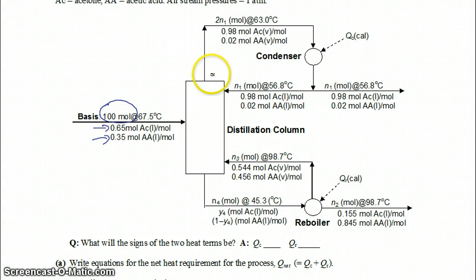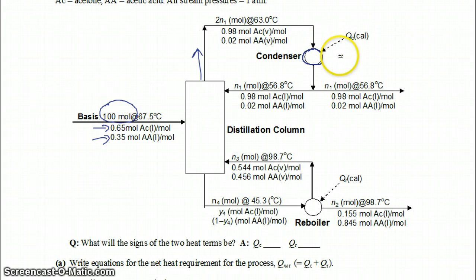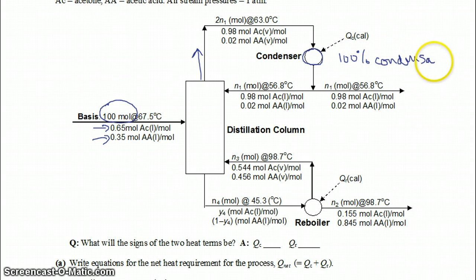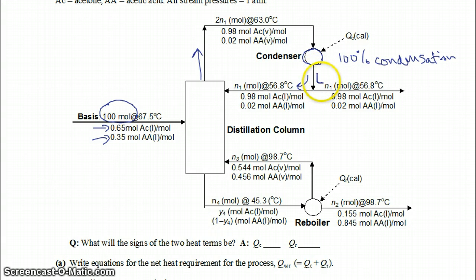The feed comes to the distillation column, and you have a vapor stream leaving out of the top. That vapor stream is fed to a condenser, and all of the vapor stream is condensed — so you have 100% condensation to liquid. Half of that liquid is then sent back to the distillation column as reflux, and the other half is sent as your product stream. Because this is just a splitter, the compositions between these two streams are the same.